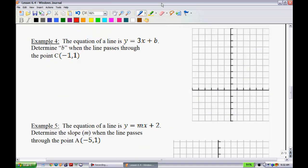Example 4. The equation of a line is y equals 3x plus b. So this time we do not know what b is, we do not know our y-intercept. It says determine b when the line passes through the point C at negative 1, 1. So you could solve this by using algebra or you could even use it with the graphing method. I'm going to demonstrate both.